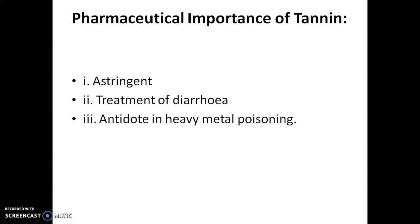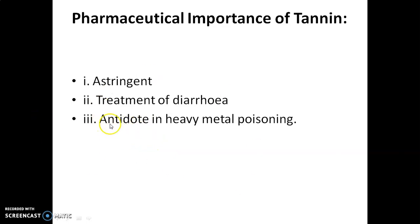Pharmaceutically, tannins are very important compounds mostly used as astringents and for the treatment of wound healing, piles, hemorrhage, boils, and sore throat. Their astringent property — precipitating proteins — is also utilized for the treatment of diarrhea, as they precipitate certain essential proteins in the gastrointestinal tract and prevent the loss of water. Since tannins co-precipitate heavy metals, pesticides, and alkaloids, they can also be useful as an antidote in cases of heavy metal or pesticide poisoning.